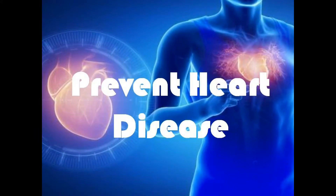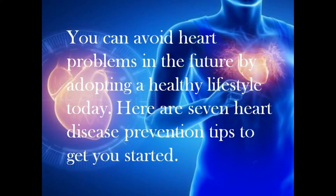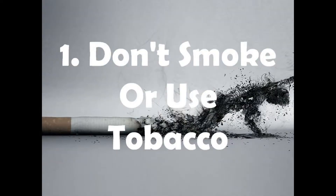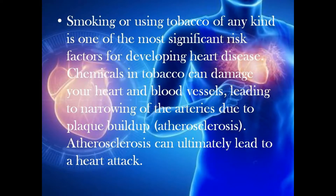You can prevent heart disease and avoid heart problems in the future by adopting a healthy lifestyle today. Here are seven heart disease prevention tips to get you started. Don't smoke or use tobacco — smoking or using tobacco of any kind is one of the most significant risk factors for developing heart disease. Chemicals in tobacco can damage your heart and blood vessels, leading to narrowing of the arteries due to plaque buildup, a condition called atherosclerosis, which can ultimately lead to a heart attack.